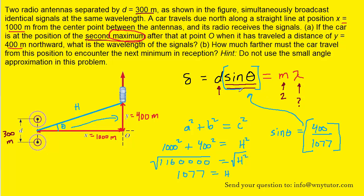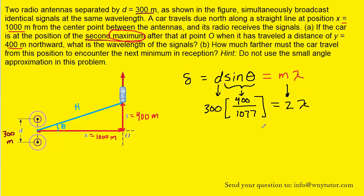So we now have everything we need to figure out the wavelength. We can plug in all the given and known information into this equation right here. So there we have it. We've plugged in all the known values. Don't forget that m was equal to 2 because we're looking at the second maximum. All we need to do now is just divide both sides of this equation by 2, and that will help us isolate the wavelength.